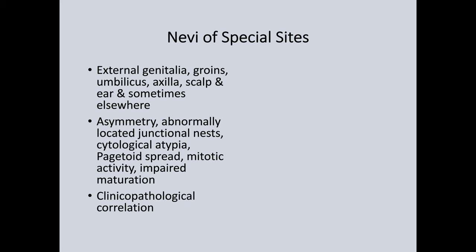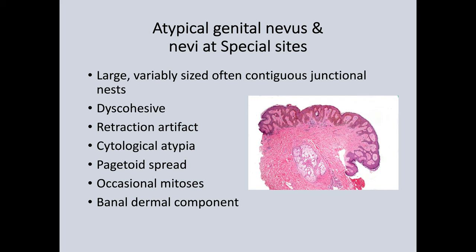Nevi at special sites all look pretty much the same. They have large and variably sized junctional nests that may show bridging. The melanocytic population is very discohesive and may look frankly malignant. Usually the dermal component appears banal, which makes it easier. On the right we have a very early lesion — you can see a lot of pigmentation and some junctional nests, and even at this magnification you can see the nuclei are very large and hyperchromatic.